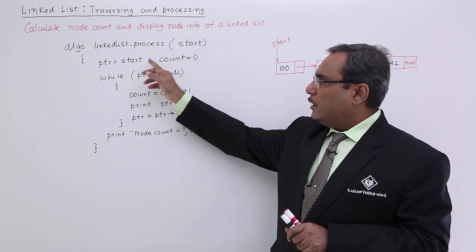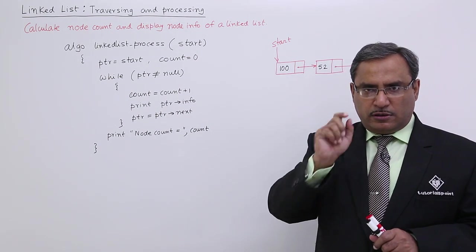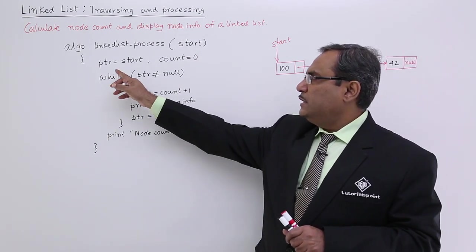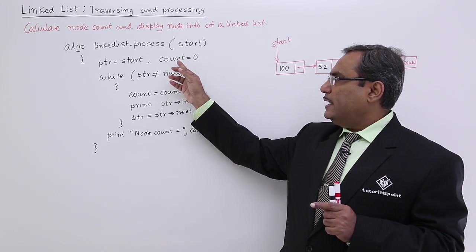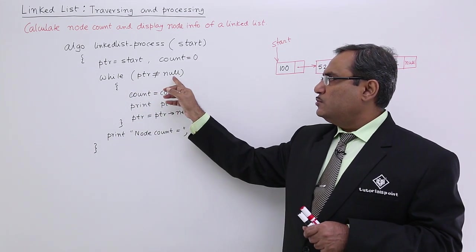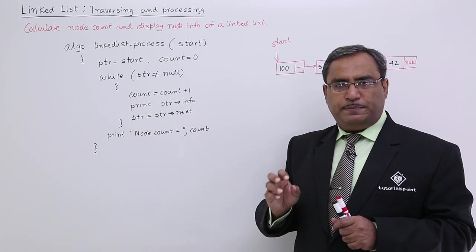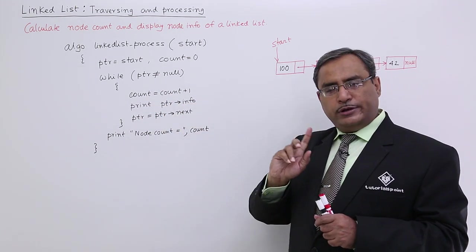From this particular argument, I am just initializing PTR variable with this start content. So PTR is equal to start and before going inside this while construct, I am just making count equal to 0. So while PTR is not equal to null, count is equal to count plus 1. So now it will go on counting.